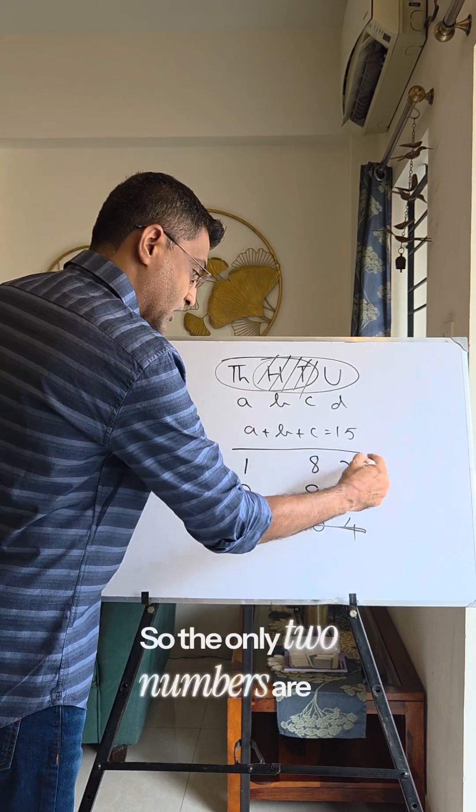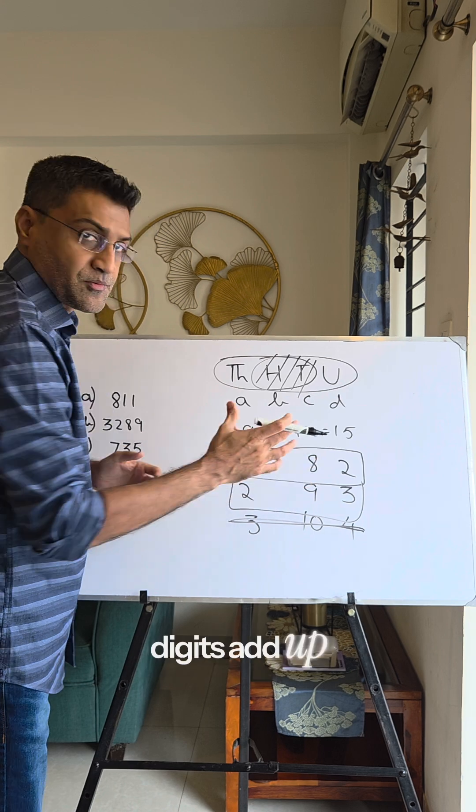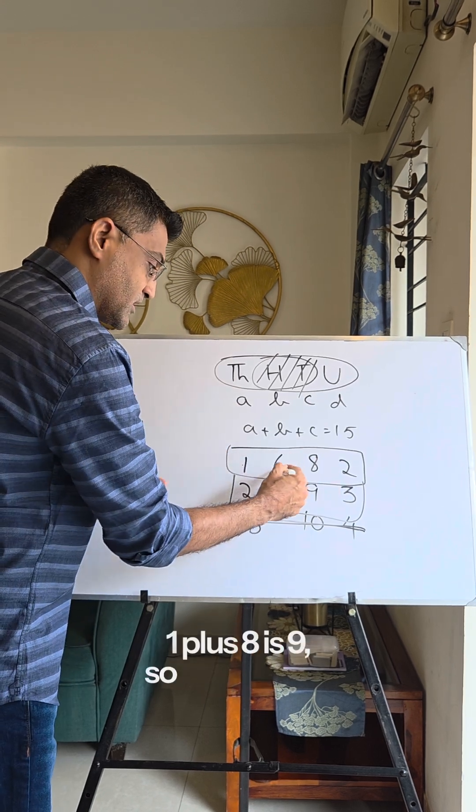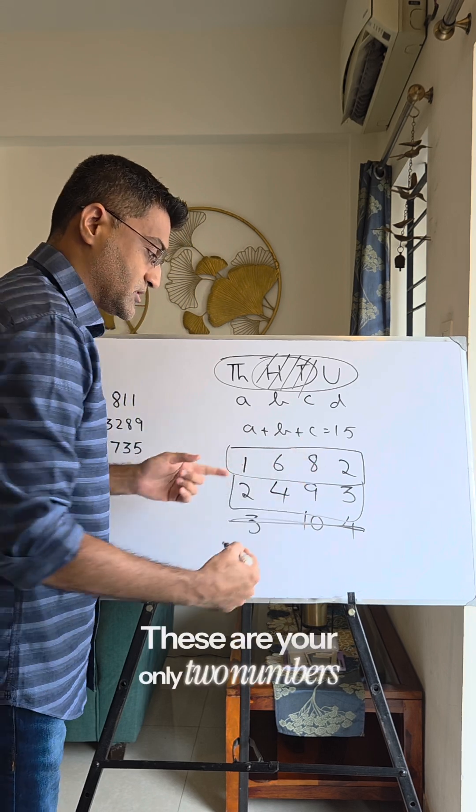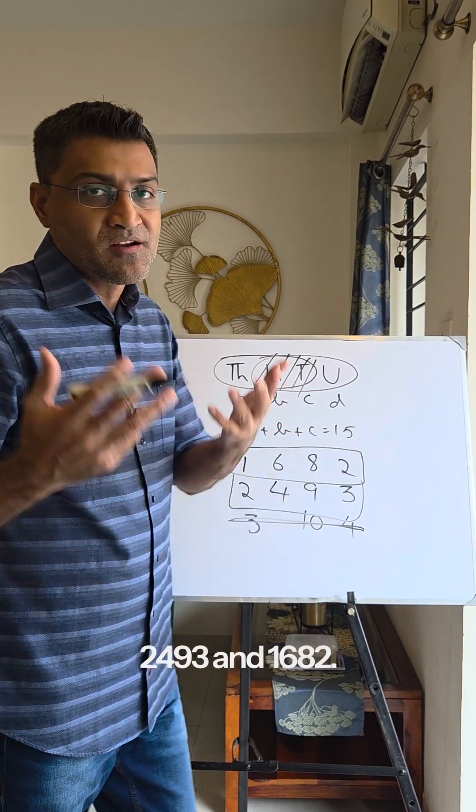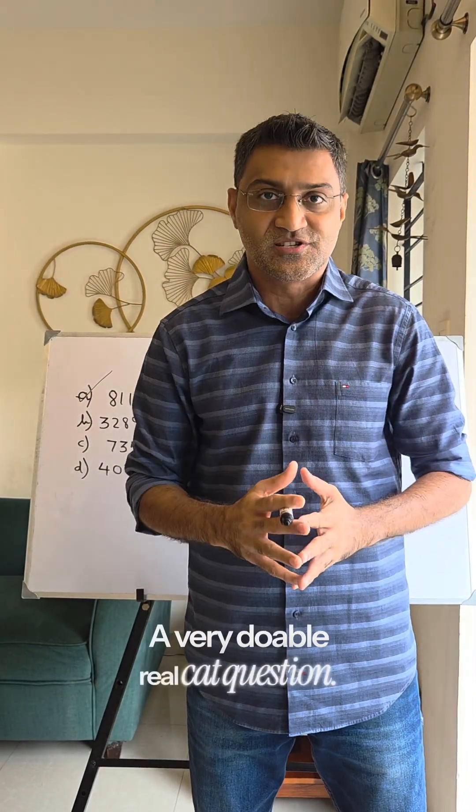Also, they've told that the first three digits add up to 15. For one case: 1 + 8 = 9, so the hundreds digit is 6. For the other: 2 + 9 = 11, so the hundreds digit is 4. These are your only two numbers: 2493 and 1682. Find the difference between the numbers, and the answer is 811. A very doable real CAT question.